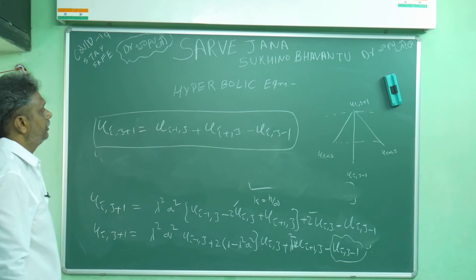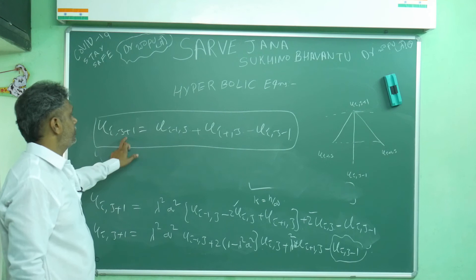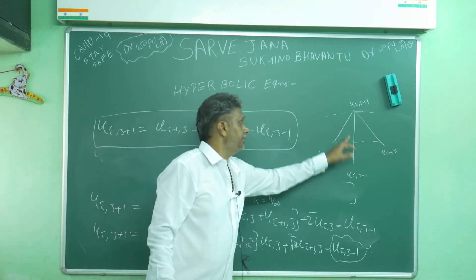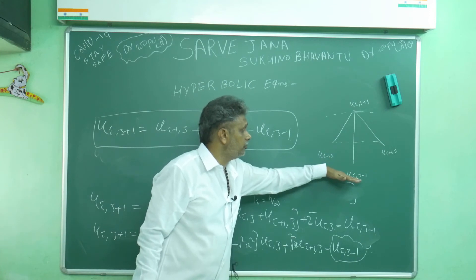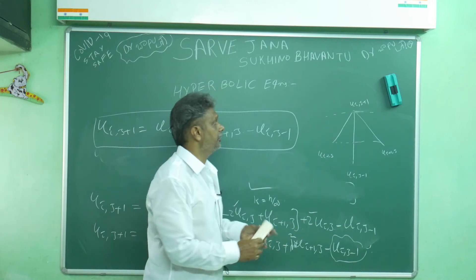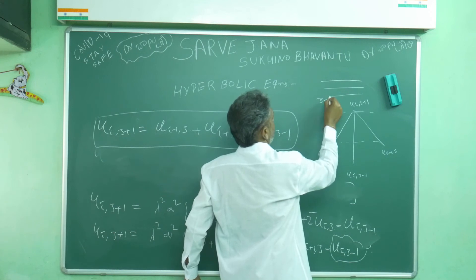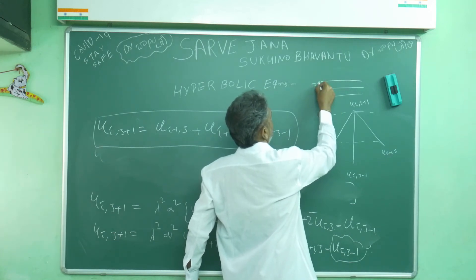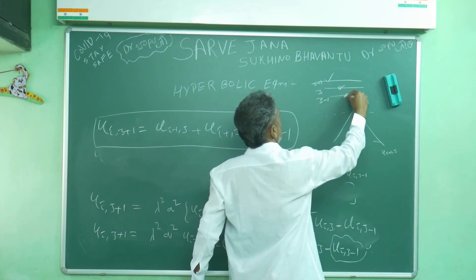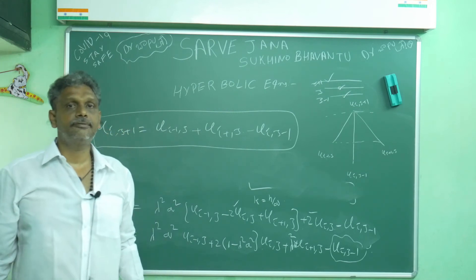This is the finite difference scheme. To find the j plus one row, you need values at both the j-th and j minus one rows — that is, two rows of data. Without both rows, it is impossible to proceed.